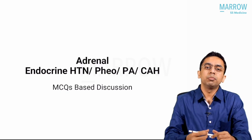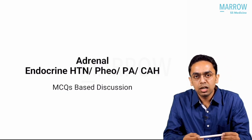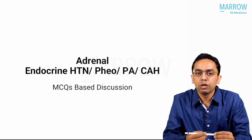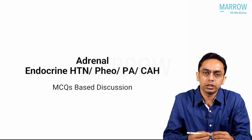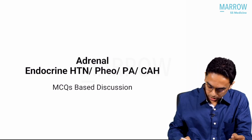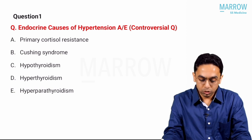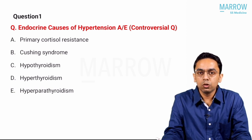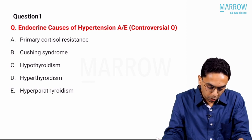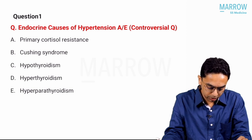This will also be an MCQ-based lecture and I have included most of the controversial and clinical questions. Let's start with our first question: endocrine cause of hypertension includes all except — options are primary cortisol resistance, Cushing syndrome, hypothyroidism, hyperthyroidism, and hyperparathyroidism.